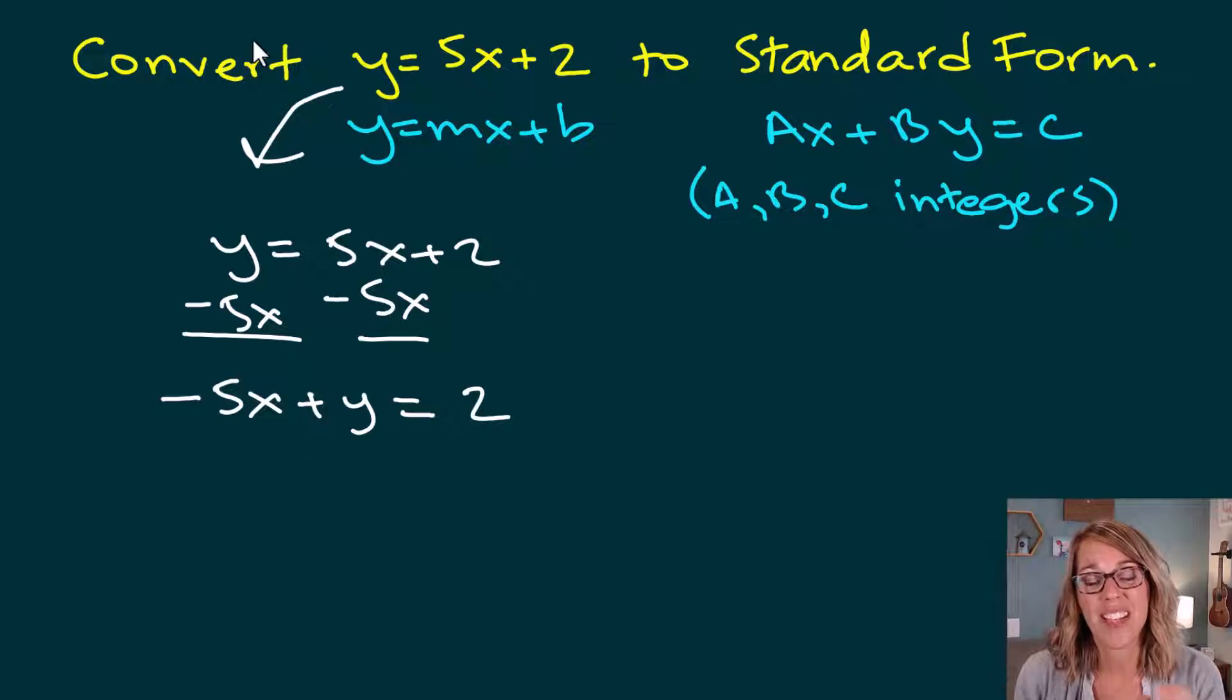Now you might also need to have no negative lead coefficient for standard form. If that's the case, we're also going to divide by negative 1. And I'm going to go ahead and do it for all of these. So I want them not only to be integers, but I want a to be a positive integer. So a is going to be greater than 0 or equal to 0 would be fine too.